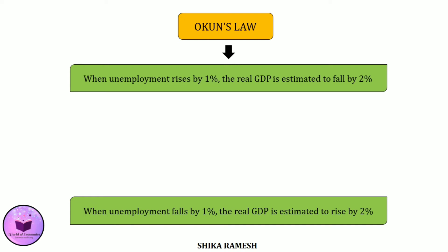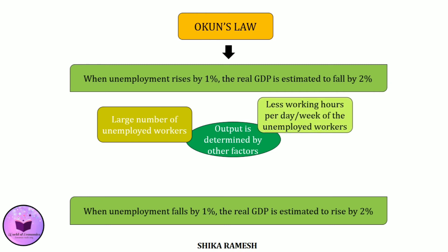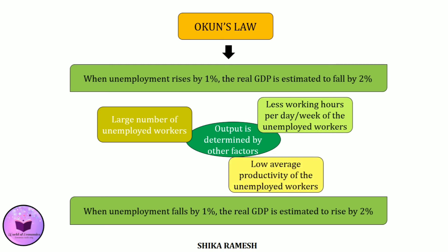Now, you might be wondering why a 1% rise in unemployment is causing a two-time fall in the output. This is because the real output is not only determined by the number of unemployed workers, but is also determined by some other factors, such as the lesser working hours per day or per week of those unemployed workers, as well as the low average productivity of those unemployed workers. So it simply means that when more and more workers are unemployed, more and more workers are working less per day or per week — so their working hours have also decreased. At the same time, those unemployed workers' productivity has also decreased. And all these aspects are reflected in the output — the output falls. So all these factors contribute to twice the decrease in the aggregate output when unemployment rises just by 1%.